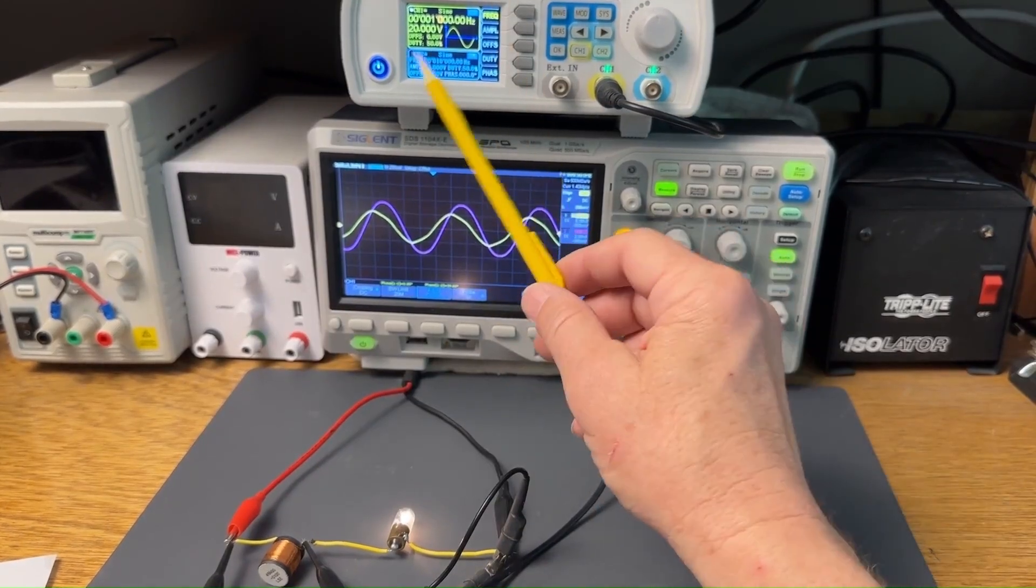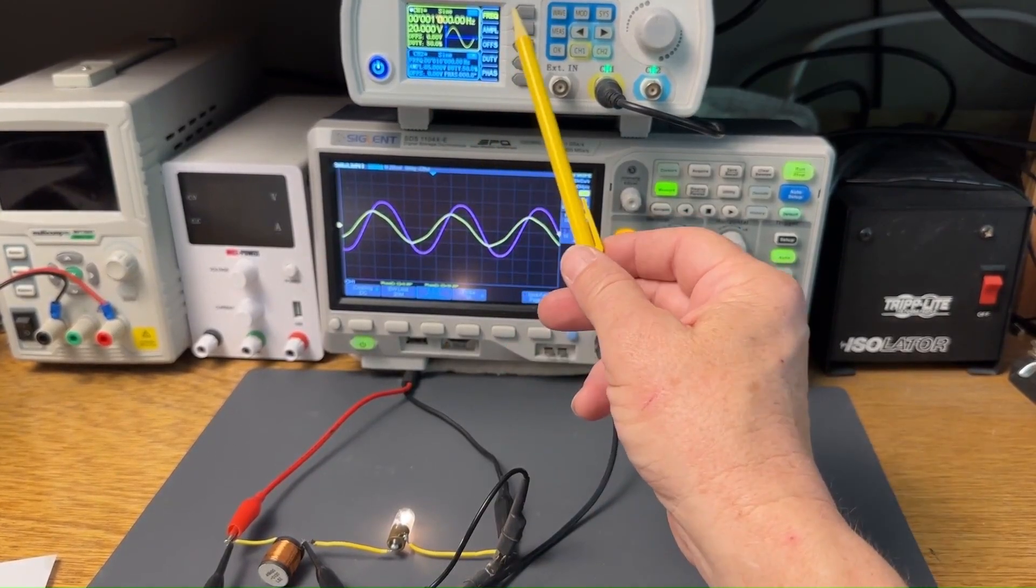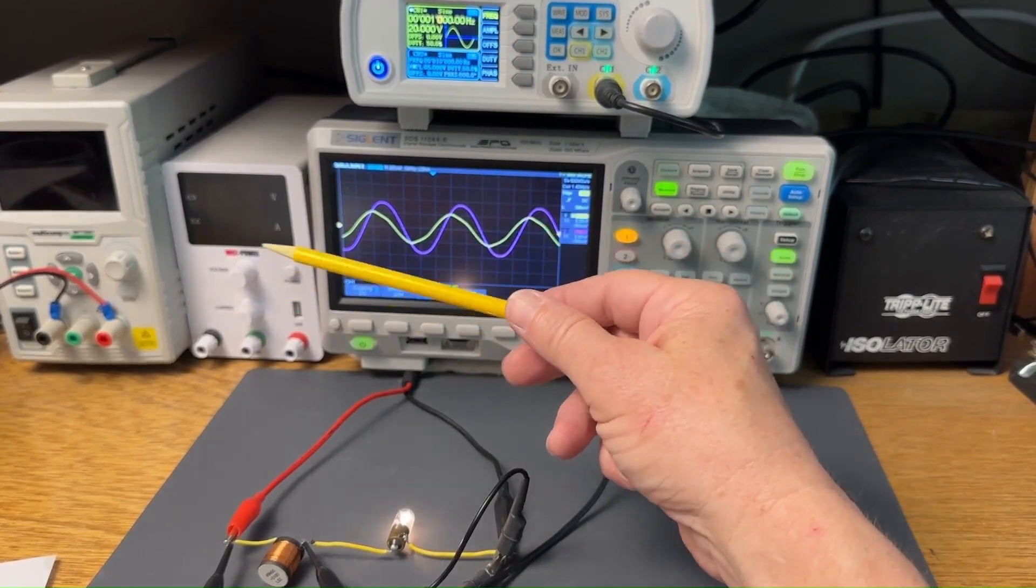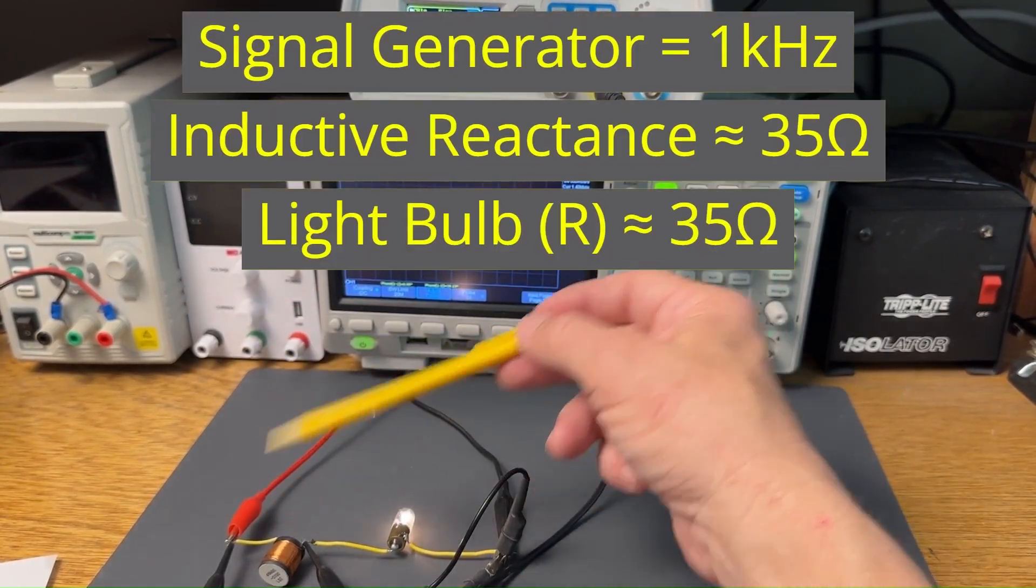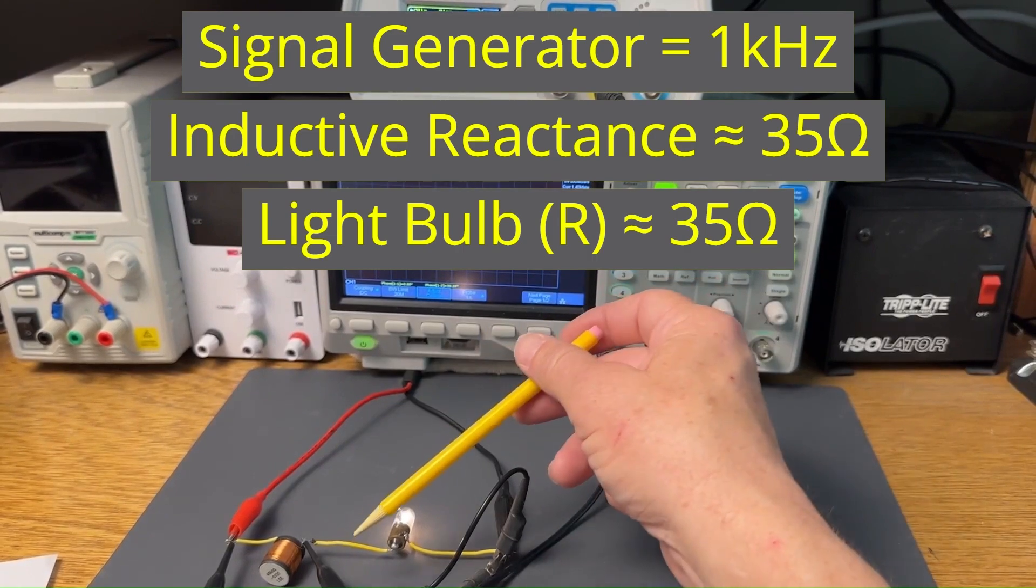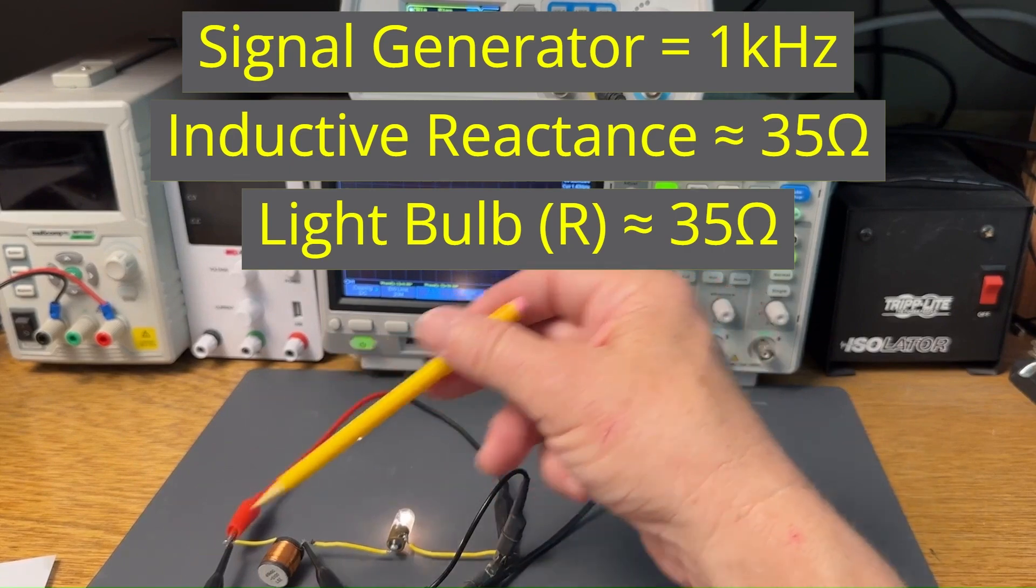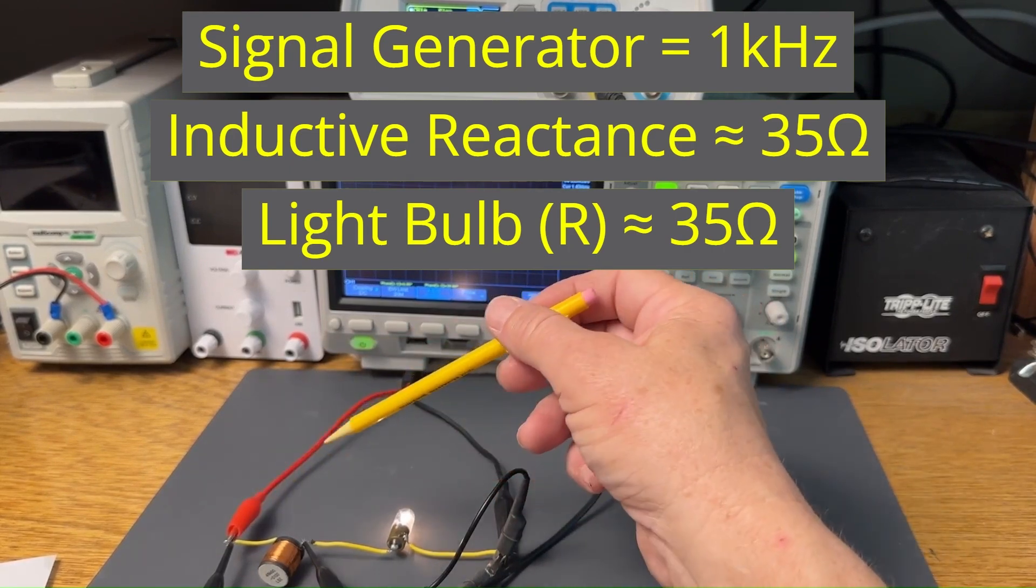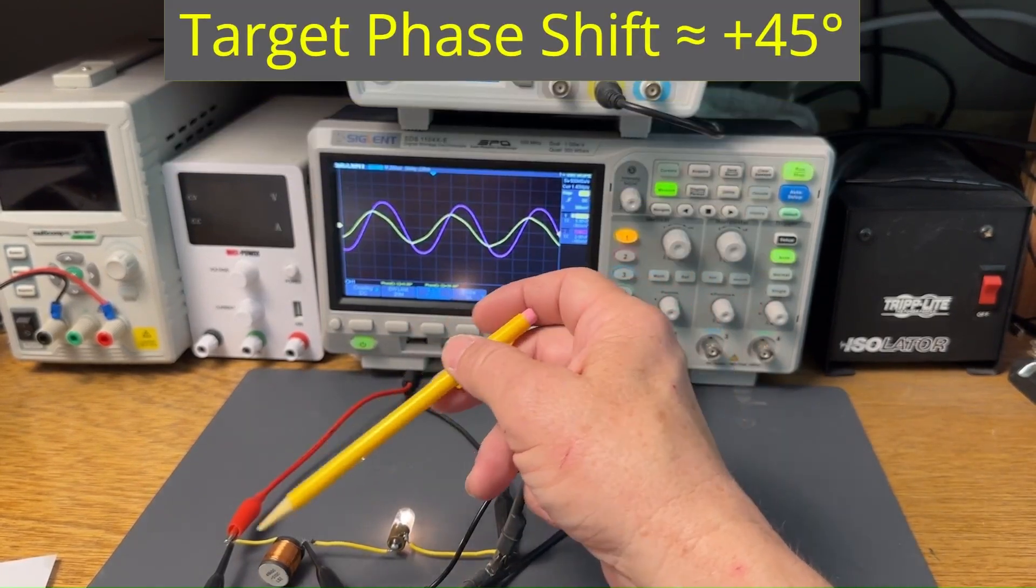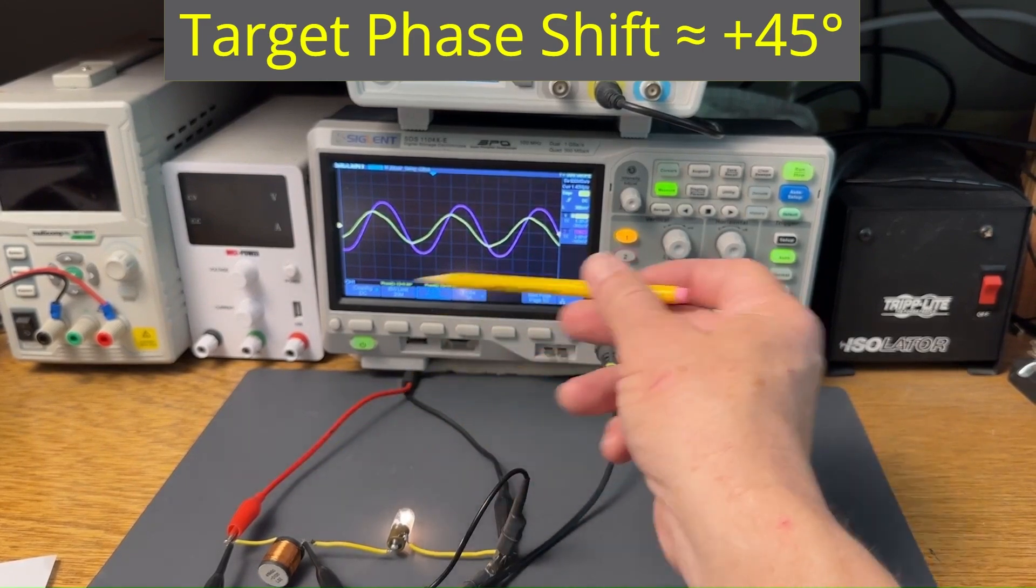To demonstrate this, I've set the signal generator to one kilohertz. At that frequency, the inductive reactance of the coil is 35 ohms, which happens to match the resistance of this light bulb. We could have used a different frequency, but went with one kilohertz to keep the numbers nice and clean. This should, however, create about a 45-degree phase difference between the voltage and current for our demonstration.